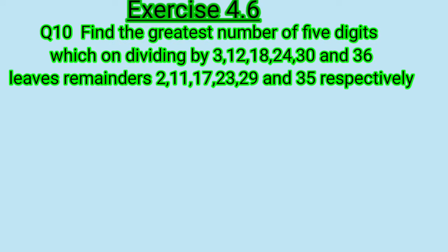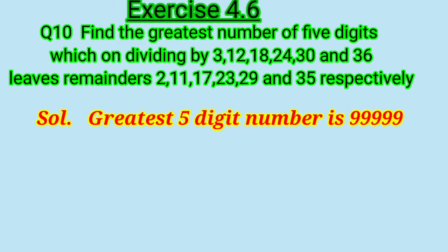Students, let's continue with exercise 4.6, question number 10. Find the greatest number of 5 digits which on dividing by 3, 12, 18, 24, 30 and 36 leaves remainders 2, 11, 17, 23, 29 and 35 respectively. Now first of all, what is the greatest 5-digit number?